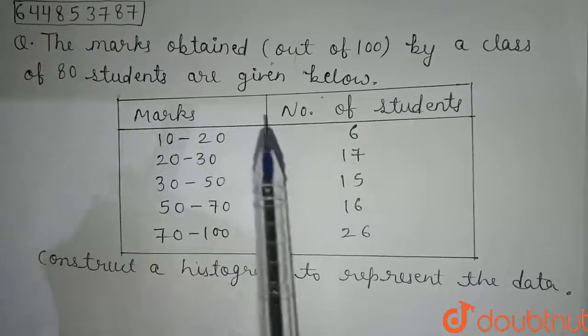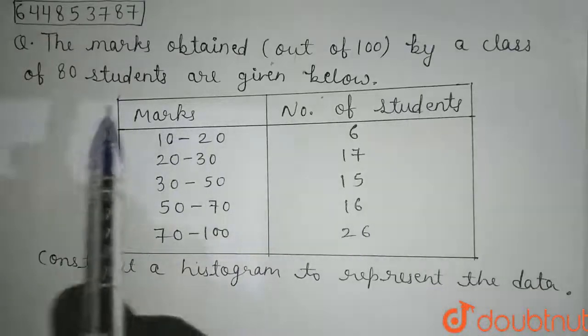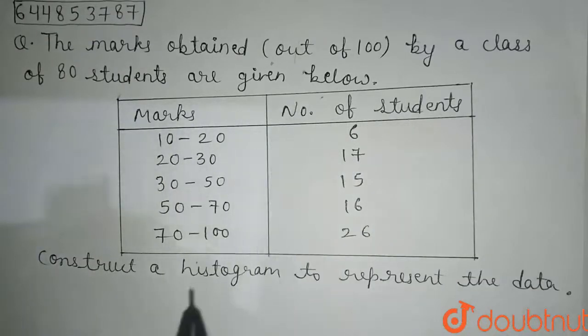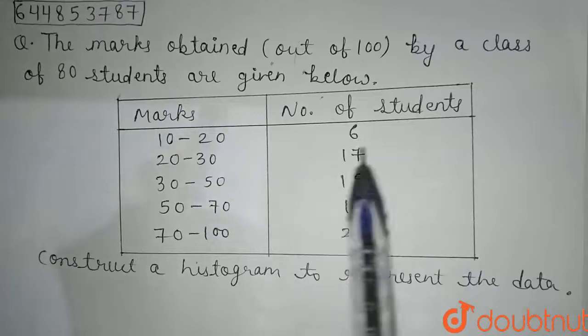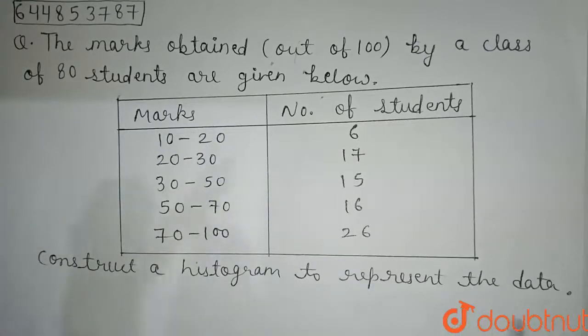Welcome friends. The question is: the marks obtained out of 100 by a class of 80 students are given below. We have to construct a histogram to represent the data.